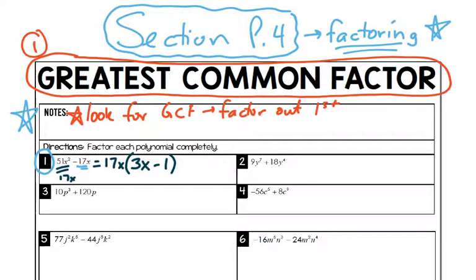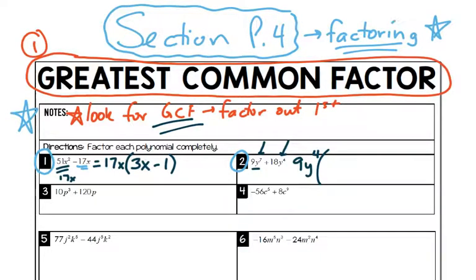How about we try number two together? It says factor, so we're changing this from addition into some version of multiplication. Always look for GCF first. Look at the numbers — how about 9 and 18? The GCF is 9. Now we have y⁷ and y⁴, so we can only take out y to the fourth — the shortcut is to look at the smaller exponent. When you factor out 9y⁴, the leftover from the first term: 9 divides out and y⁷ divided by y⁴ leaves y³. From the second term, 18 divided by 9 is 2, and y⁴ divided by y⁴ is just 1. Number two is done.